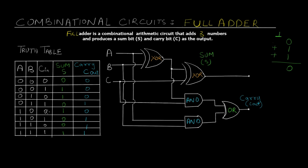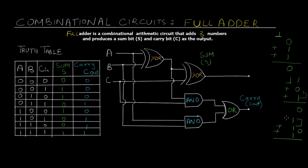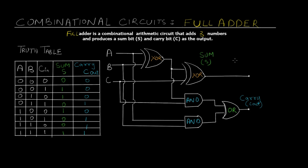For the next case, A is one and the rest are zero, so sum is one and carry is zero. When A is one, B is zero, and C is one — same scenario — sum is zero and carry is one, because one plus zero is one and one plus one gives you zero with a carry. Similarly, for the second-to-last case we have A and B as one and C as zero. For the last case we have all ones: one plus one plus one. One plus one gives you zero and one gets carried, and zero plus one gives you one — so sum is one and carry is also one.